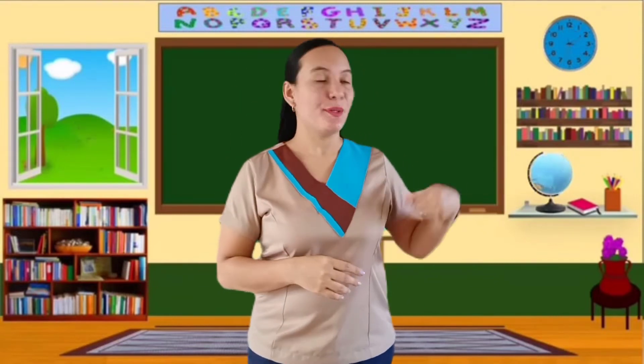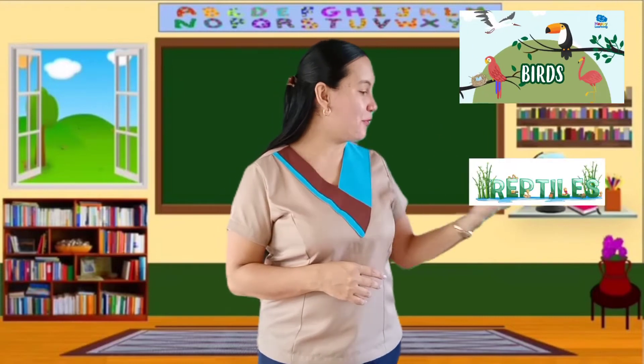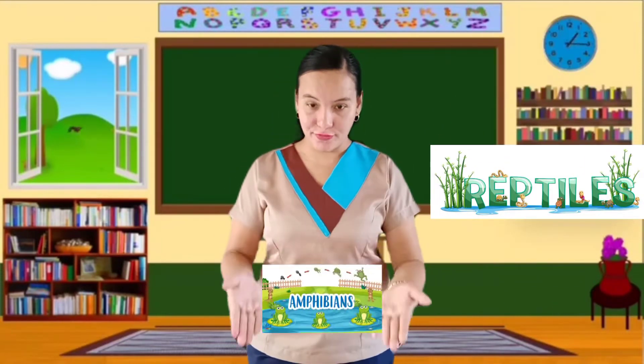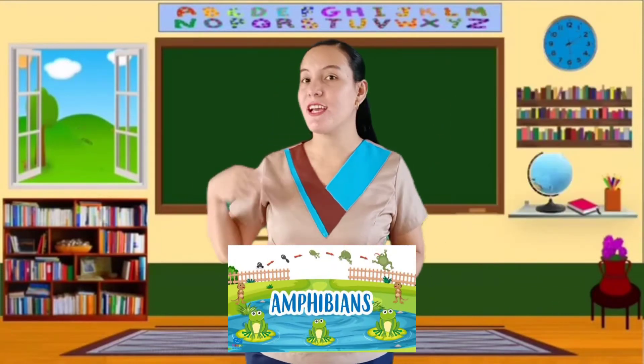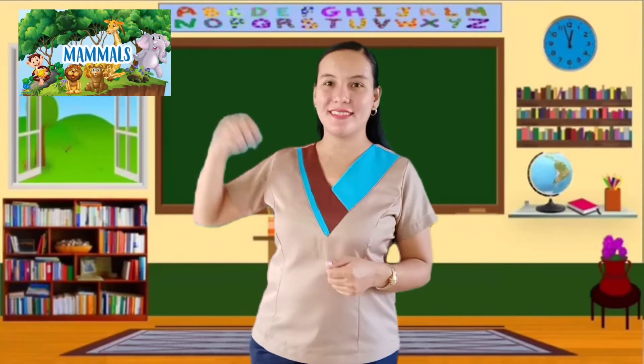Normally, vertebrates are classified into five smaller groups: Birds, Reptiles, Amphibians, Fish, and Mammals.